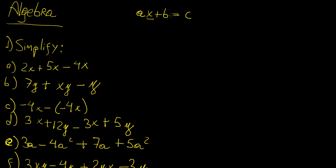With an equation, we know that we can do the same thing to both sides. For example, we could subtract b from both sides so that this side becomes just ax. And then we can divide or multiply both sides by the same number — in this case, divide both sides by a — and then the solution would simply be x equals c minus b divided by a.